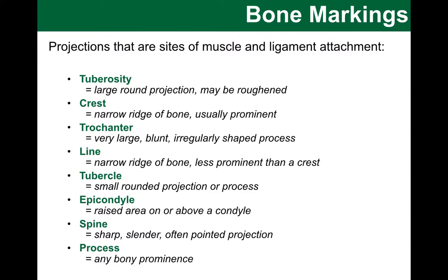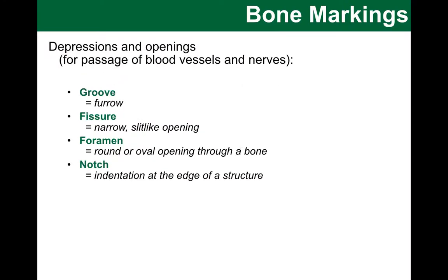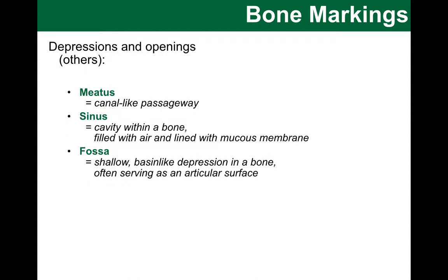There are numerous bone markings that I wish you to review independently using your textbook. Please go through these paying attention to the projections that are sites of muscle and ligament attachments, projections that help to form joints, depressions and openings for the passage of blood vessels and nerves, and other kinds of openings and passageways. These terms will become important as we look at the major bones of the skeletal system in more detail, and I will be expecting that you are familiar with and comfortable using this language.